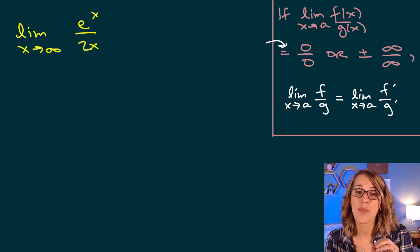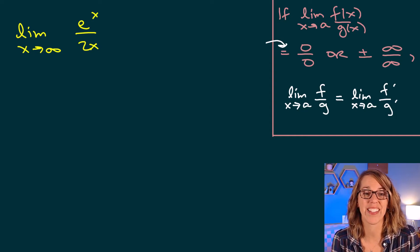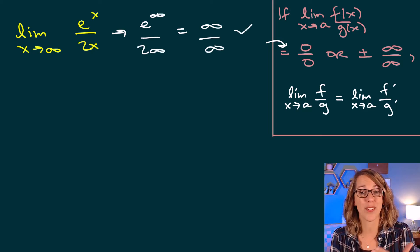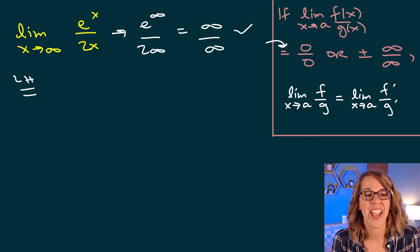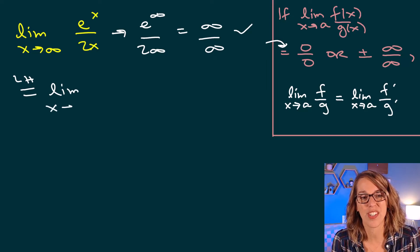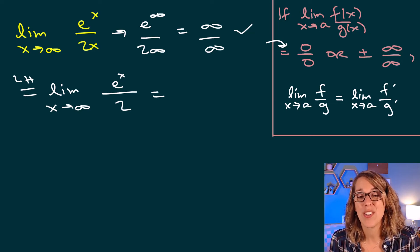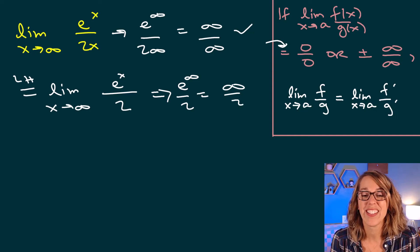In this next example I already have a quotient, so I check whether L'Hôpital's applies. Plugging in infinity gives E to the infinity over 2 times infinity, which is infinity over infinity — L'Hôpital's rule definitely applies. Taking derivatives, the derivative of E to the X is just E to the X, and the derivative of 2X is 2. Applying infinity, I get E to the infinity over 2, which is infinity divided by 2 — not indeterminate. The answer is infinity.